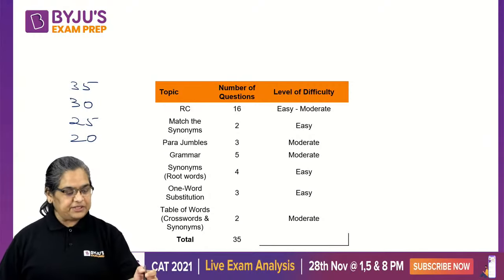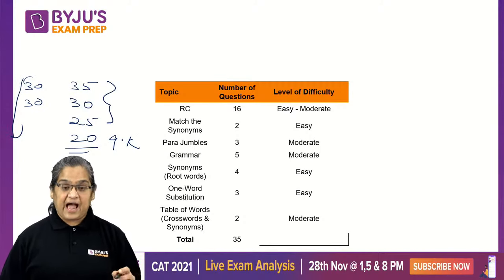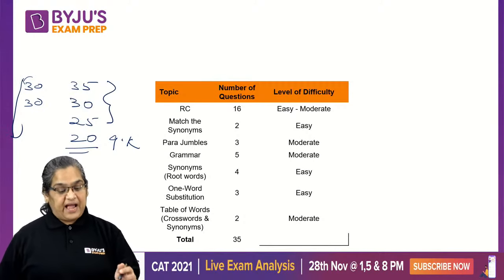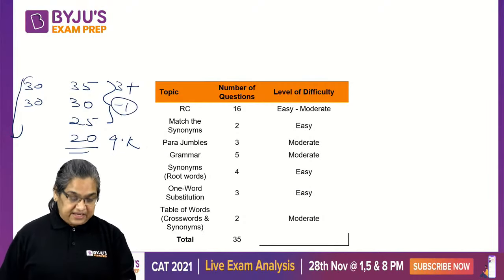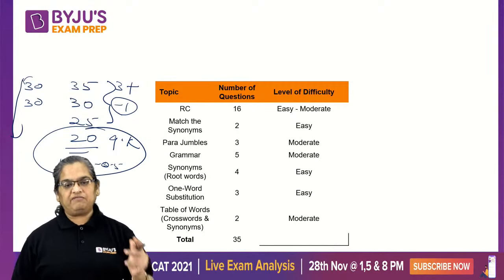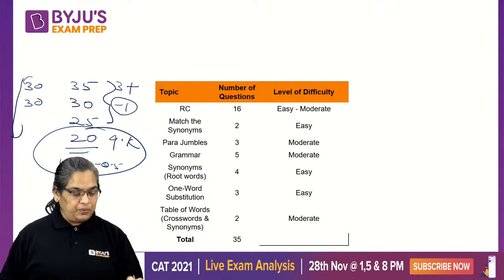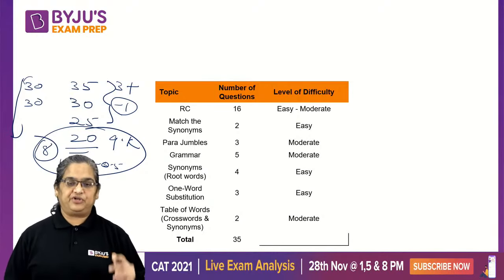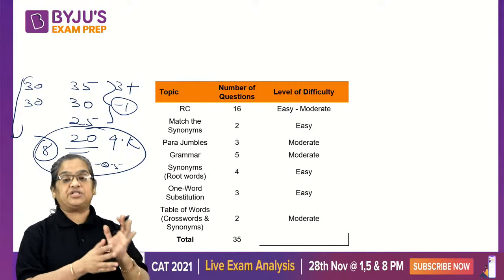Ideally, 2 hours means you should be spending 30 minutes each in each of the sections. But some sections have more marks — 3 positive, minus 1 if you make a mistake. For VARC it is only 1.5 and minus 0.5. These 20 GK questions you can finish very quickly — either you know the answer or you don't. So you should take a maximum of 8 minutes for your GK section, which means the time for other sections is more.